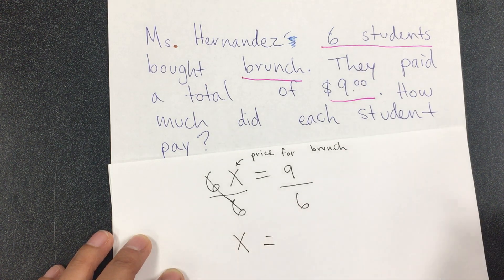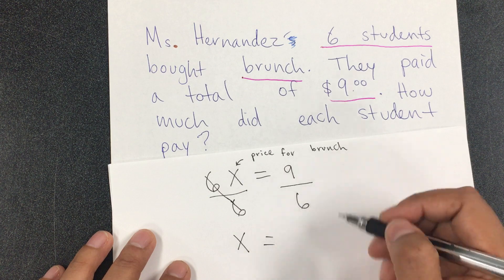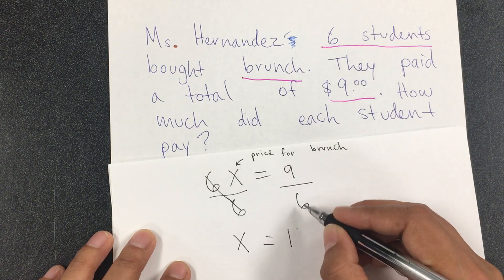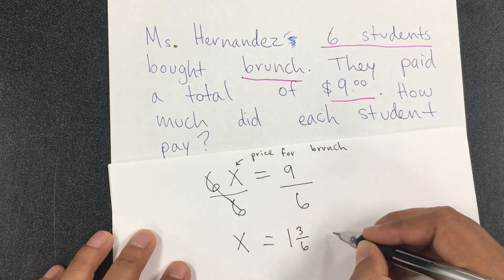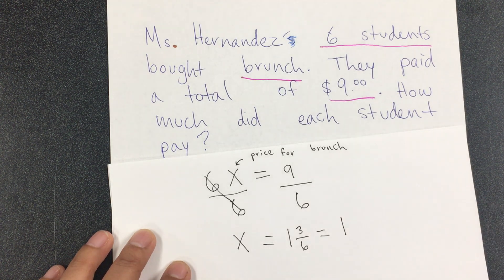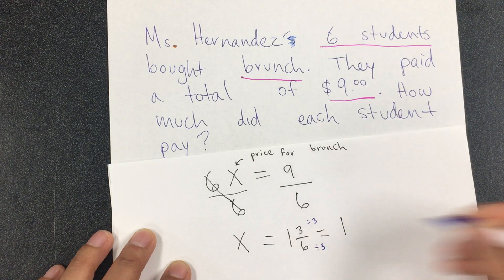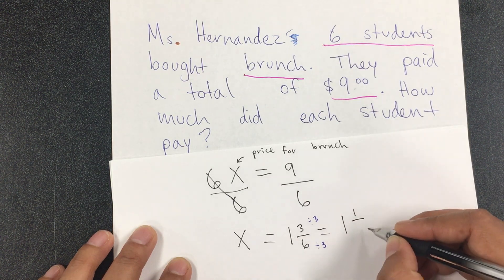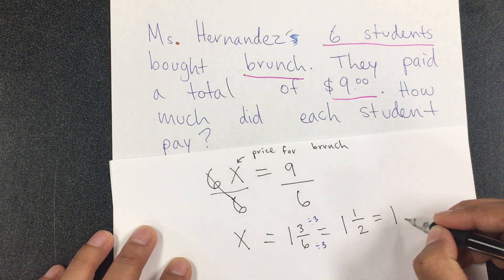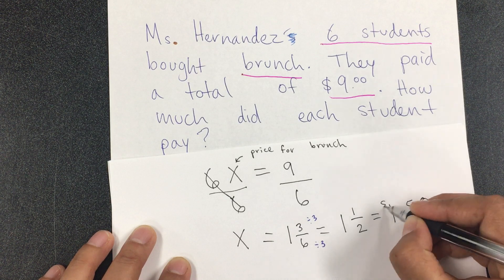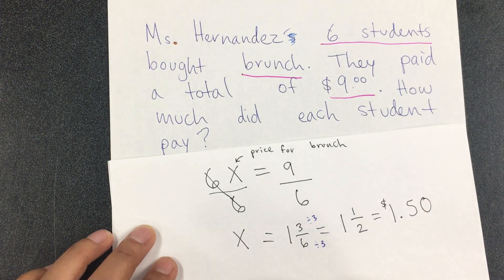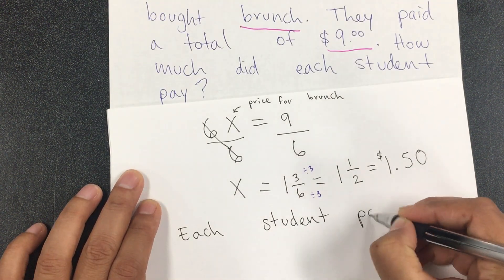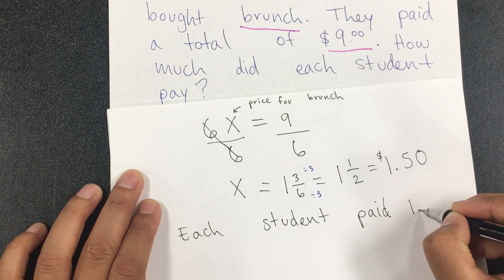This cancels and you get X, the price of brunch, equals nine divided by six. Six goes into nine one time with three remaining, giving the fraction 9/6. Both are divisible by three, so simplifying: three divided by three is one, six divided by three is two. That gives one-half, which is 50 cents. So X equals one dollar and 50 cents. Each student paid one dollar and 50 cents. Make sure you end by answering your question.